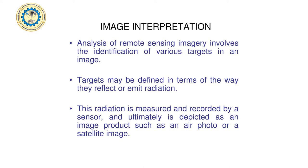Image interpretation involves the identification of various targets in an image — like a boat, river, windmill, or Eiffel Tower. Targets may be defined in terms of how they reflect or emit radiation. This is what we referred to as DN number and pixel. Each pixel has a different color because of the emittance and reflectance of radiation, which is measured and recorded by sensors such as push broom and whisk broom sensors.